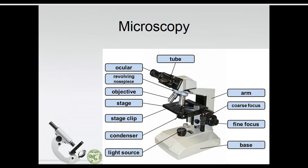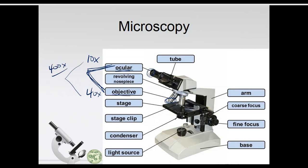What we do have at school are light microscopes, and they work really well for what we need. When talking about magnification of a light microscope, we look at the product of the eyepiece — the ocular lens — and the objective lens. We just multiply those two. So if the ocular piece is 10x and the objective is 40x, the combined magnification would be 10 times 40, which is 400 times as big.